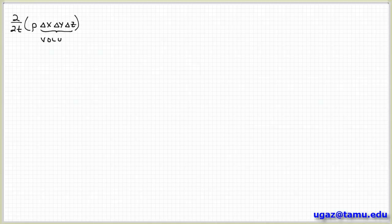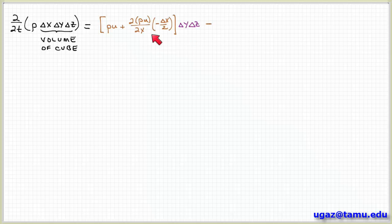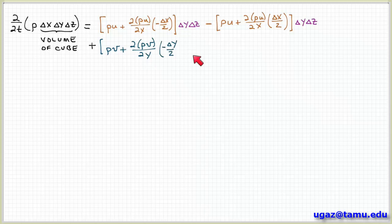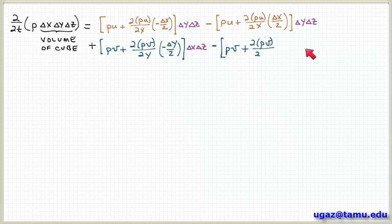Let me rewrite this whole big equation on the next slide so that we can have that as a starting point. You can see again the pattern that develops here. We have the inflow from the left-hand side face minus the outflow on the right-hand side face times the area of each face. And similarly in the y direction we have the inflow from the bottom times the area of that face minus the outflow from the top times the area of that face delta x delta z.